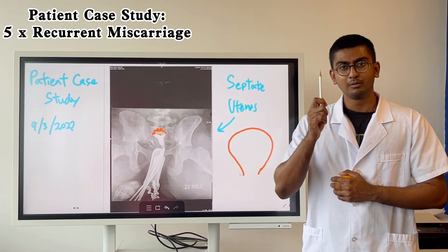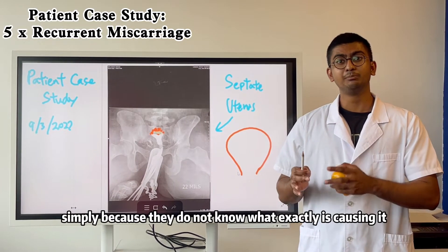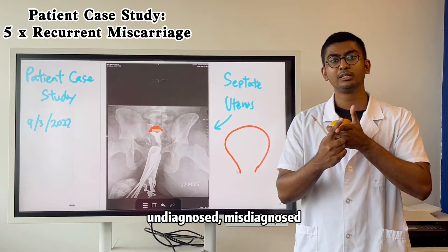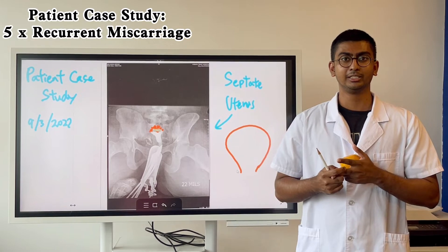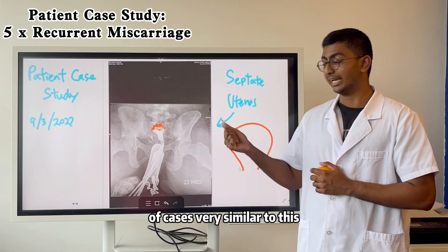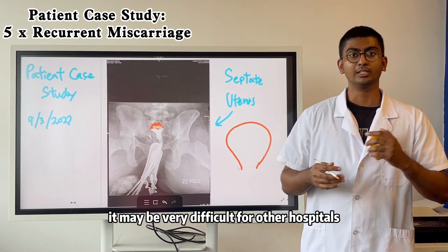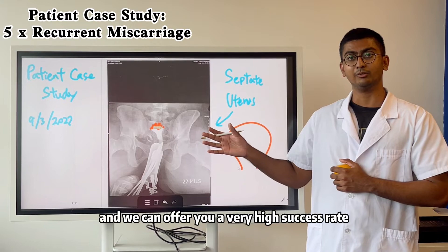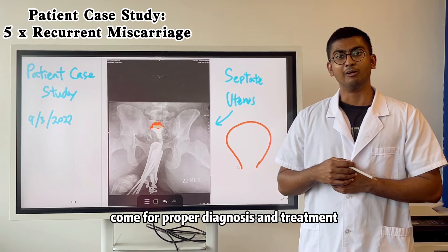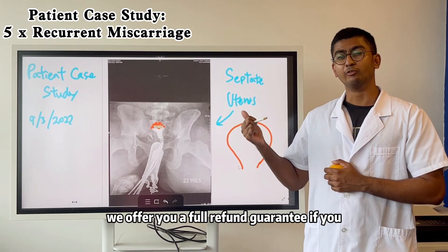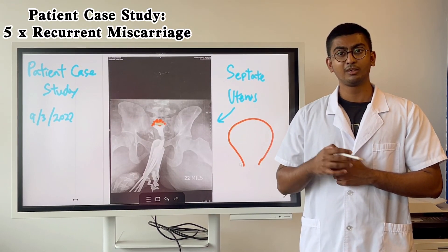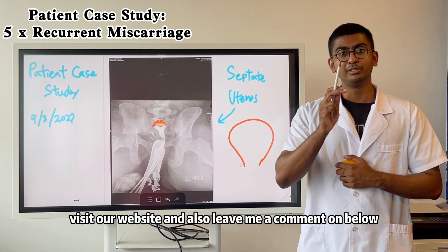So many times, repeated miscarriages are not unexplained — it's simply that other doctors do not know what is actually causing them: undiagnosed, misdiagnosed, and a lack of specialisation. Here at Antihospital we specialise in the treatment and diagnosis of cases very similar to this. It may be very difficult for other hospitals, but we can offer you a very high success rate for your next pregnancy as long as you come for proper diagnosis and treatment. We offer a full refund guarantee if you still miscarry after receiving our treatment. Visit our website and leave a comment down below.